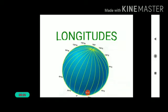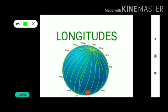Today our topic is longitudes. To fix the position of a place, it is necessary to know something more than the latitude of that place, therefore we use longitudes. All the imaginary circles perpendicular to the equator are called meridians of longitudes. The degrees are measured in degrees of longitudes. Look at this picture — this is a picture of longitudes. There are many lines here.